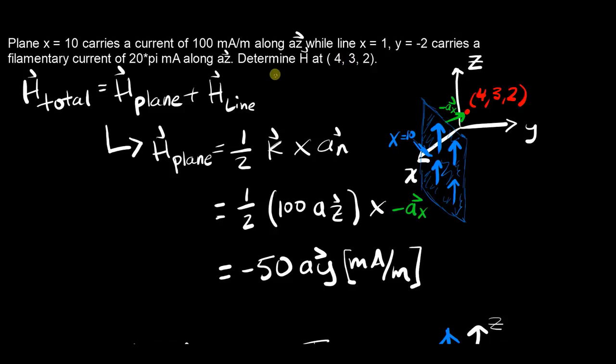Just like how you've been asked to find electric field due to several distributions of charge, you're asked now to find the total magnetic field intensity H. There are two sources of magnetic fields here in this problem. You've got the magnetic field from the plane and the magnetic field from the line. So first let's focus on finding the magnetic field due to the plane.